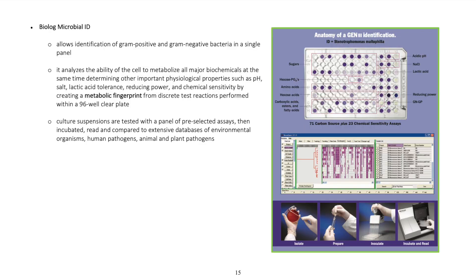Biolog Microbial ID allows identification of gram positive and gram negative bacteria in a single panel. It analyzes the ability of the cell to metabolize all major biochemicals at the same time, determining other important physiological properties such as pH salt, lactic acid tolerance, reducing power, and chemical sensitivity by creating a metabolic fingerprint from discrete test reactions performed within a 96 well clear plate.